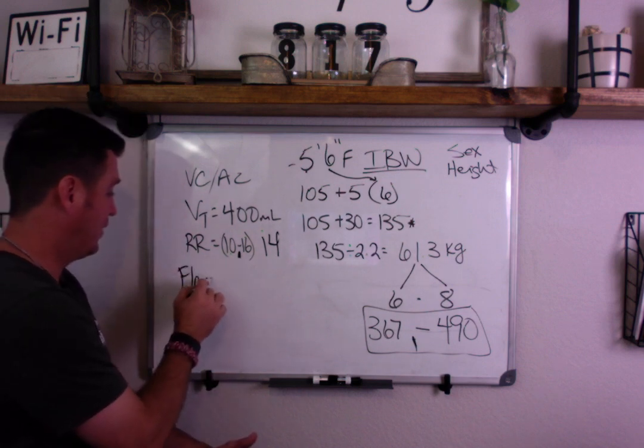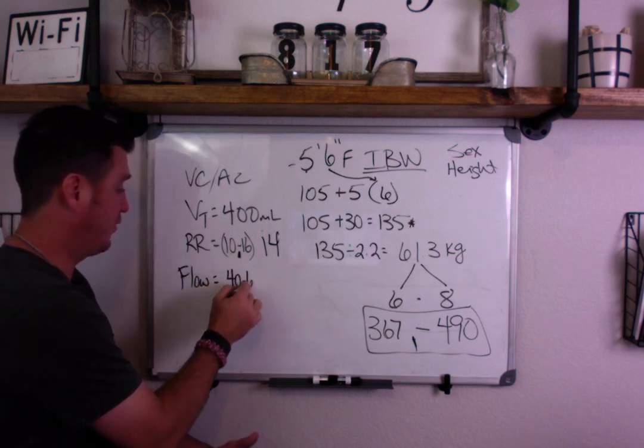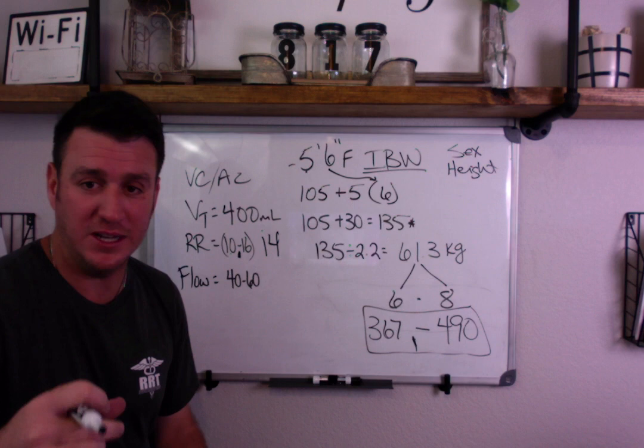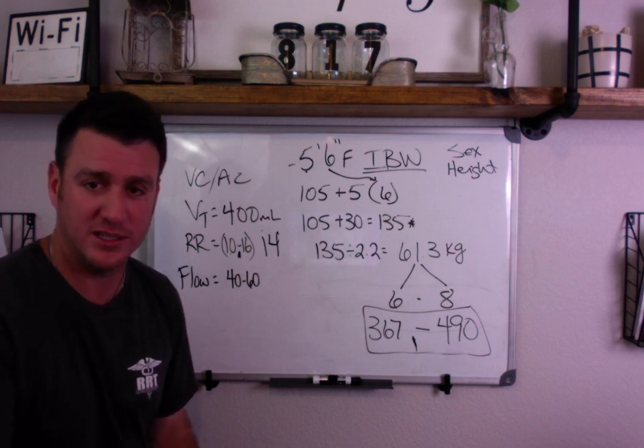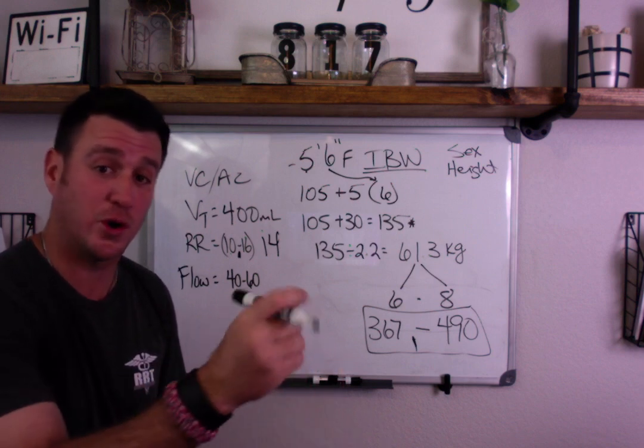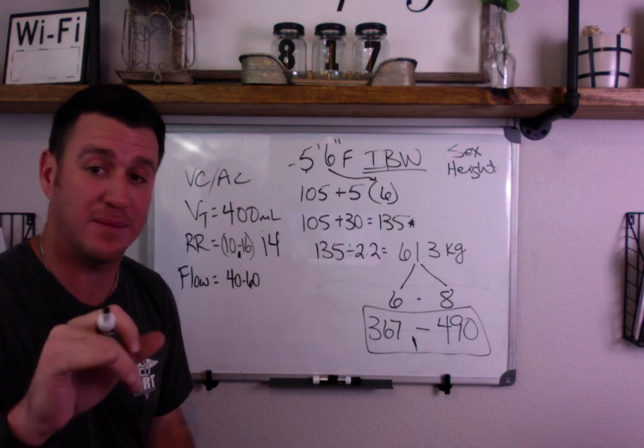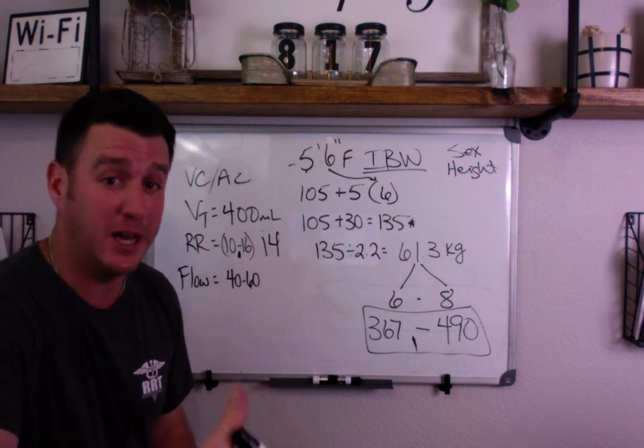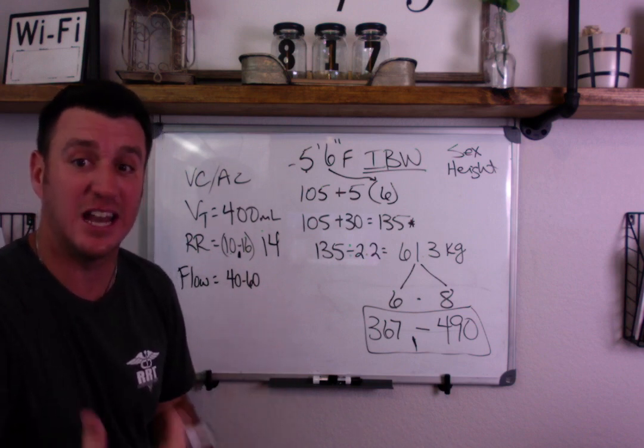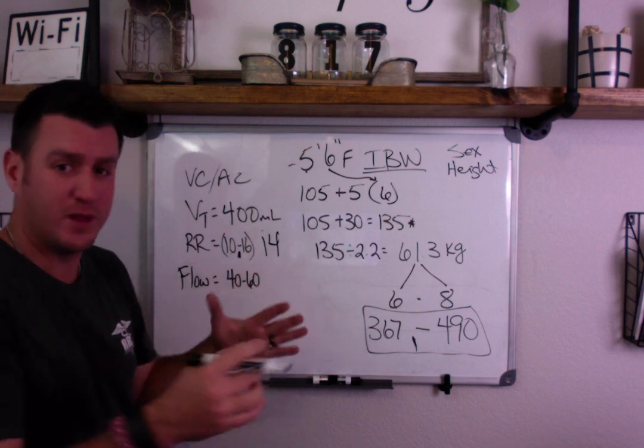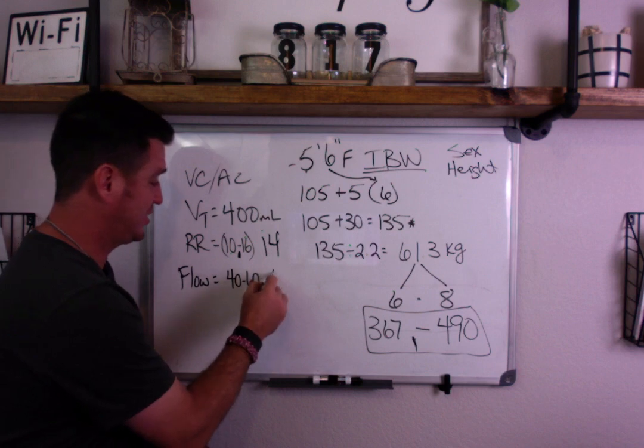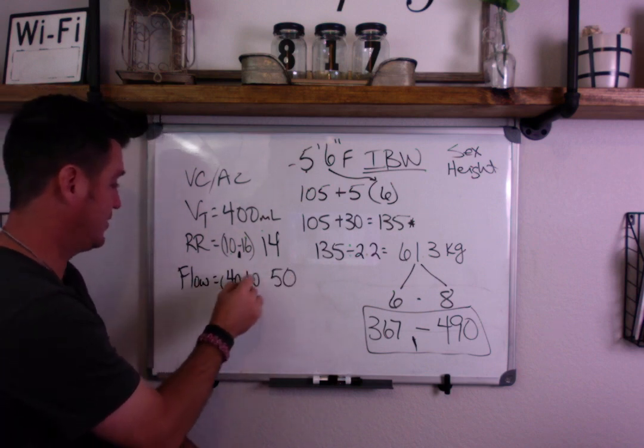Now, you got to choose a flow. Flow setting for initial setting is 40 to 60 liters per minute. If this patient has COPD or some obstructive lung disease, then you possibly may want to go higher, upper to 70. That'll shorten I time and give you a longer E time which will give them more time to exhale, reduce the chance for air trapping because they're, by nature of the obstructive lung disease, likely to do so. But for no obstructive lung disease, you can pick a flow here between 40 and 60. So, let's just go 50. These are our normal ranges.